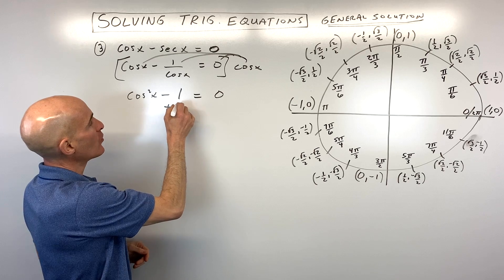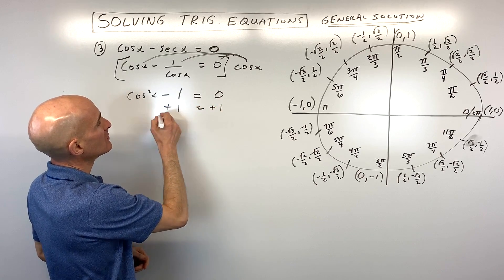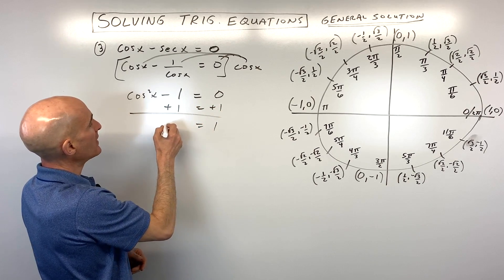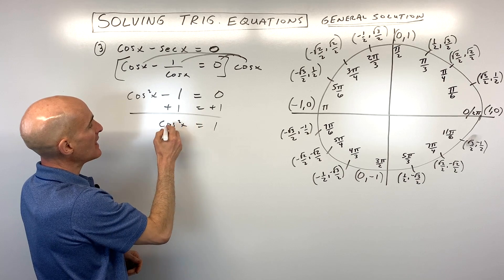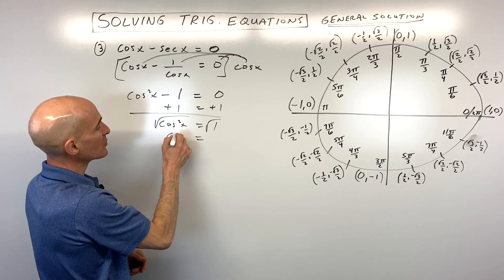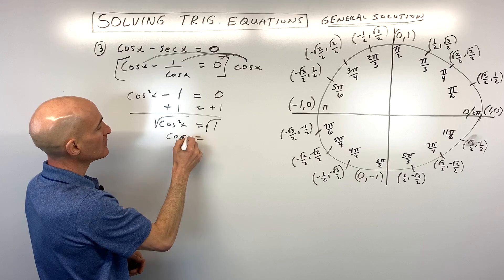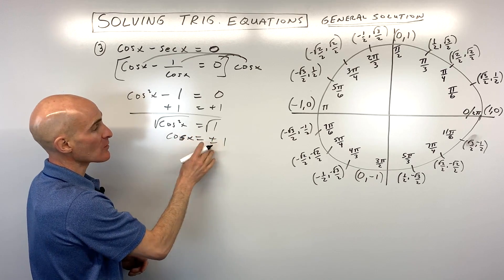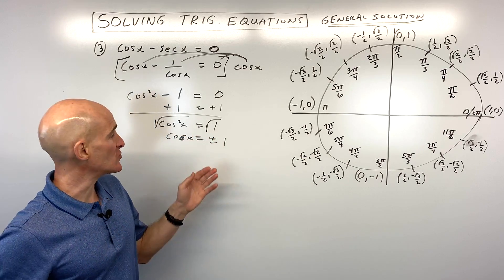So now I'm going to add 1 to both sides of the equation. So this gives us 1 and cosine squared x. And if we take the square root now of both sides to get the cosine by itself, we get plus or minus 1. Because remember, when we take the square root of both sides, we get those two answers, positive or negative.